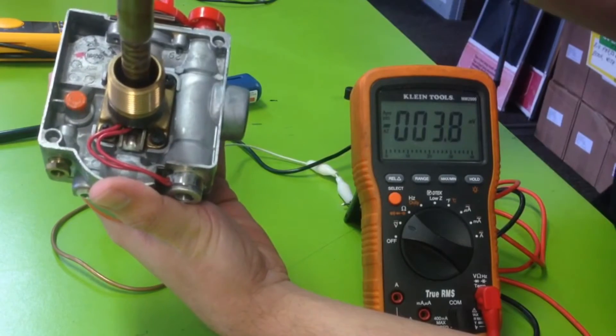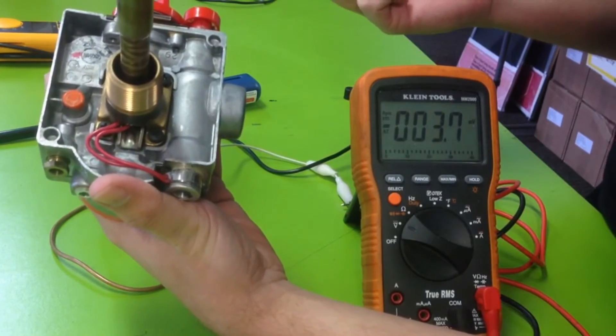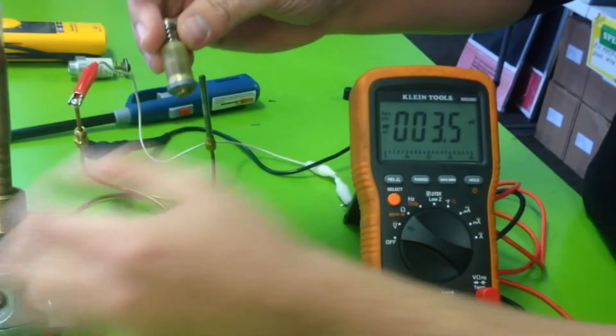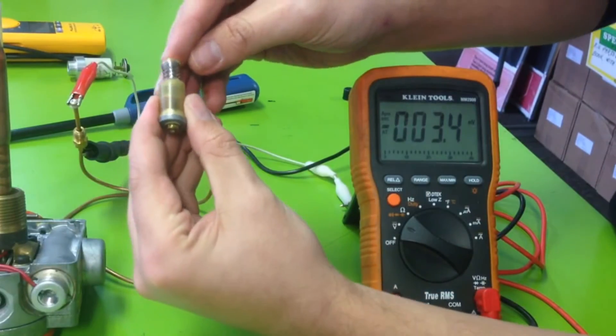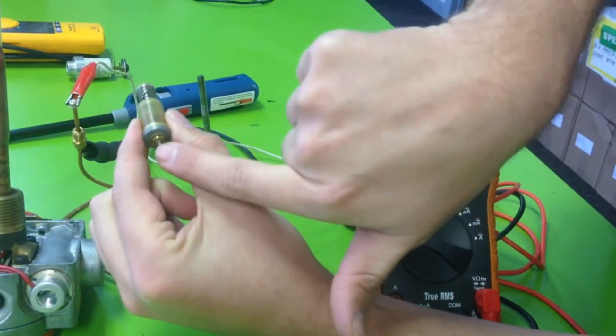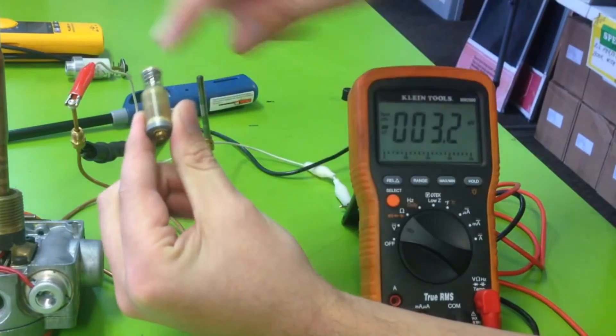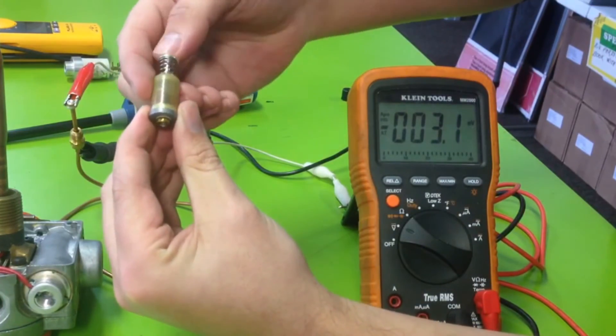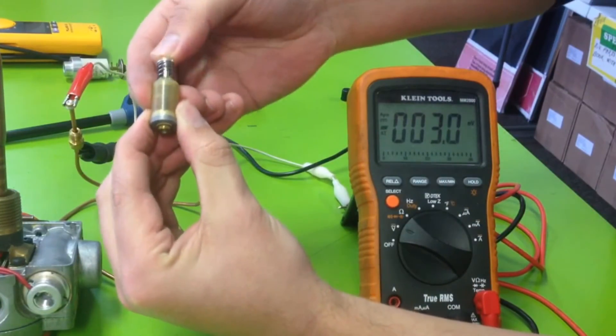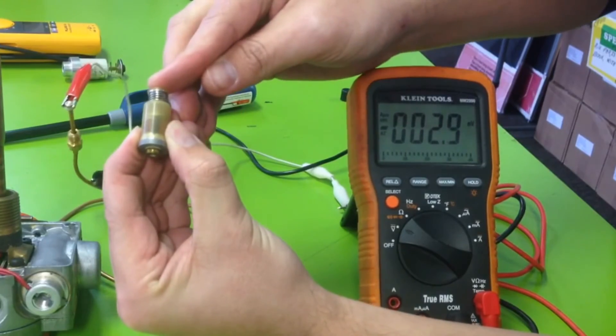That's a really quick easy way to diagnose this. So this is the internal piece - not sure how good you can see this, but how it works is when those millivolts are generated, it powers this little coil in here which makes magnetism, and that's actually what holds this down and lets the gas flow.